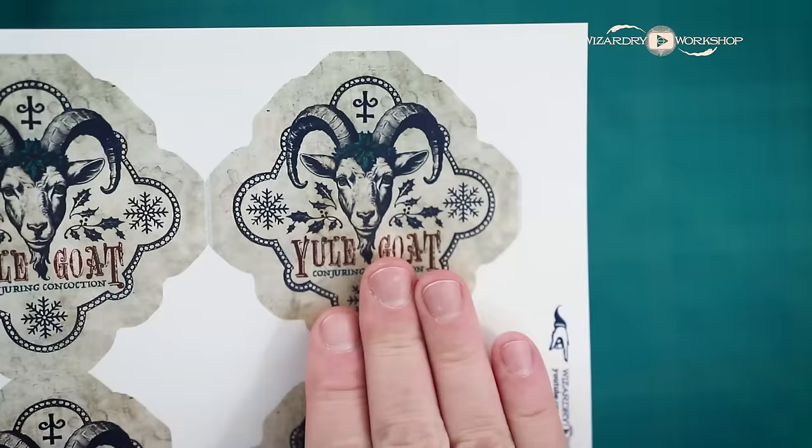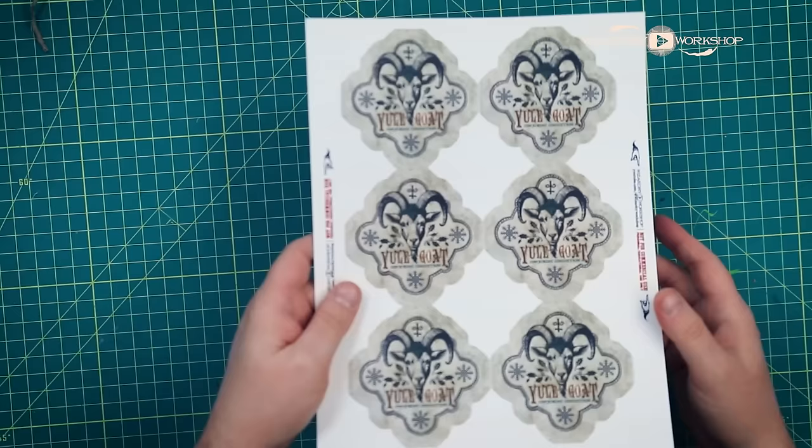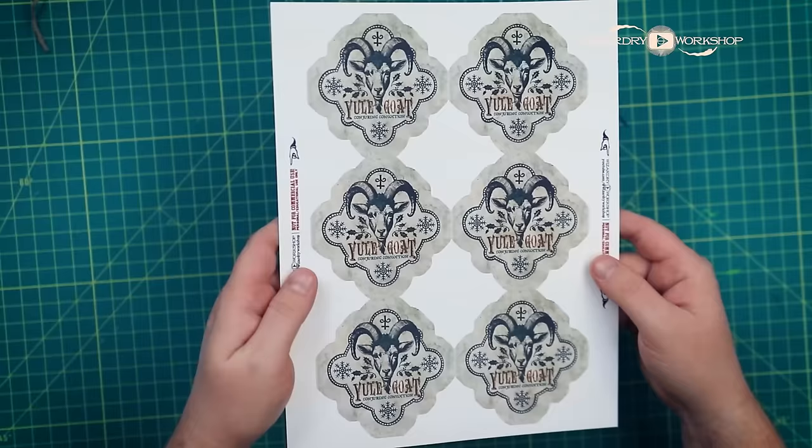All right, so first we're going to do the Yule Goat potion. Here is the label I designed. I called it the Yule Goat Conjuring Concoction. So this is printed on letter-sized sticker paper.